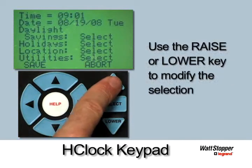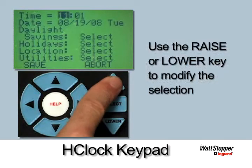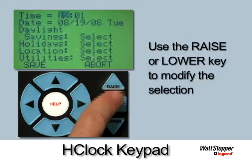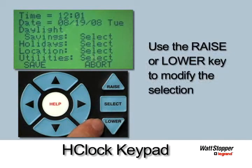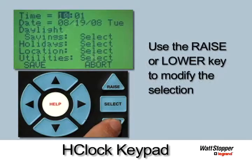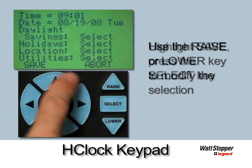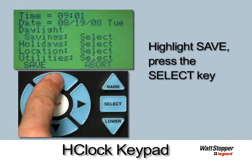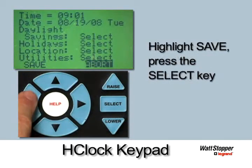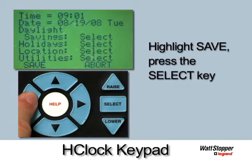The raise key will either increase in numeric value or guide the options in chronological order. The lower key will do just the opposite. Once the selection is completed, simply highlight Save and press Select.